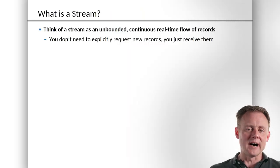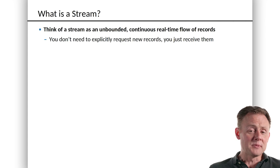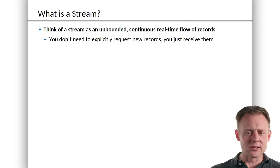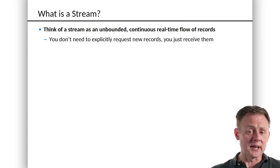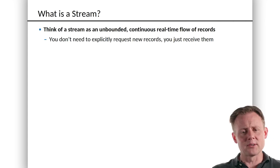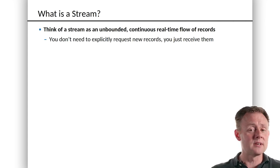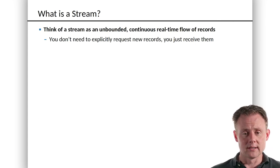Now, you want to think of a stream as an unbounded, continuous flow of real-time records. Sometimes we'll call them records, sometimes we'll call them facts. Often when we're talking about streams, we don't say 'message' like we would in the traditional world of Kafka. A stream is this unbounded flow of facts — it never stops. When you start processing it, there is no time in the future when you'll be done.